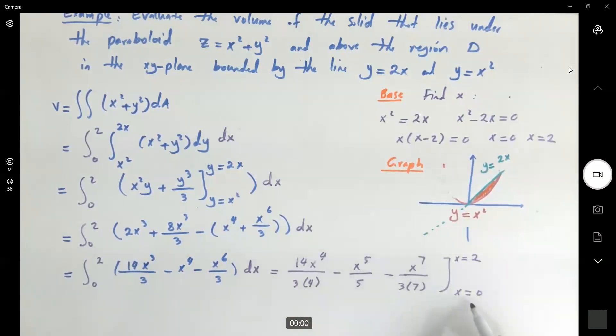Since all of these have 0, just forget about 0, just plug in 2. So you get 14 times 16 divided by 3 times 4 minus 32 divided by 5 minus here you have 32 times 4 divided by 3 times 7.